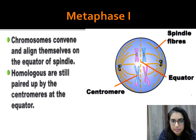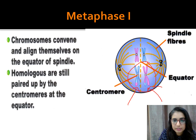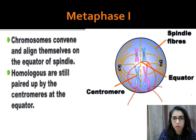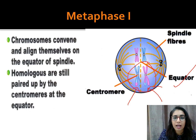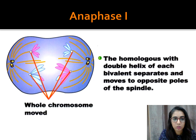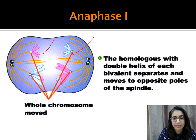In metaphase 1, after crossing over has occurred, the chromosomes convene and align themselves at the equator of the spindle fibers — the metaphase plate or equatorial plane. The key difference from mitosis is that in meiosis 1, it is the homologous chromosomes that align at the metaphase plate, still paired at the centromere. The homologous chromosomes then move toward opposite poles. The chromosomes have not yet separated into individual chromatids — they are still whole chromosomes separating as homologous pairs.